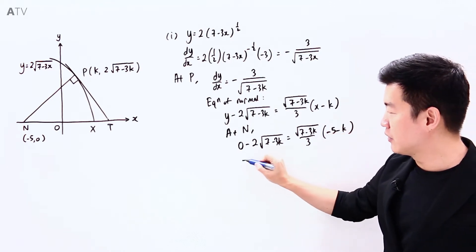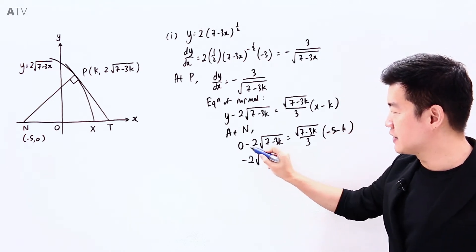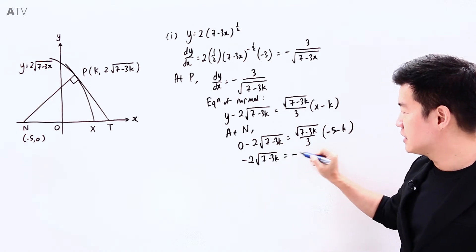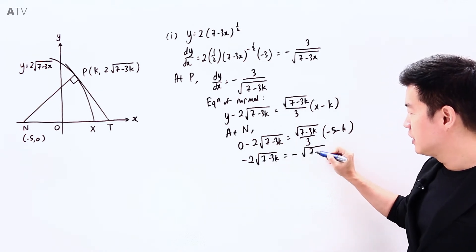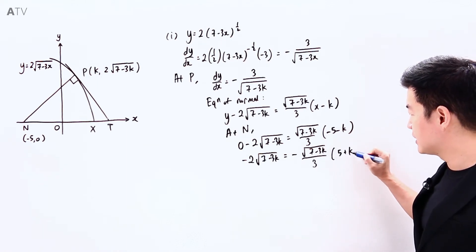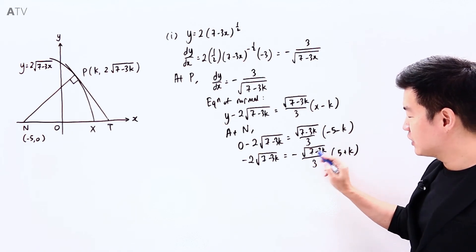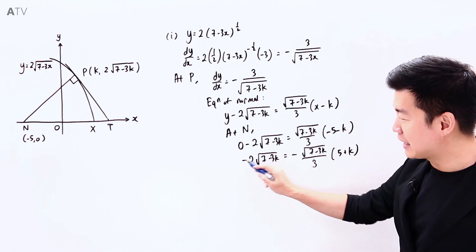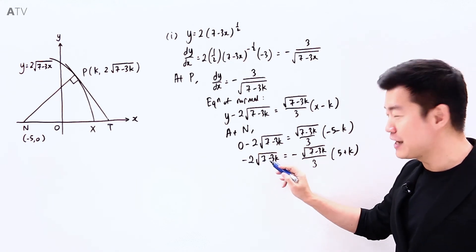If I take out negative, I will have negative 2 square root of (7 minus 3k) equals negative square root of (7 minus 3k) divided by 3, times (5 plus k). Which means that the negative square root of (7 minus 3k) terms can be cancelled.